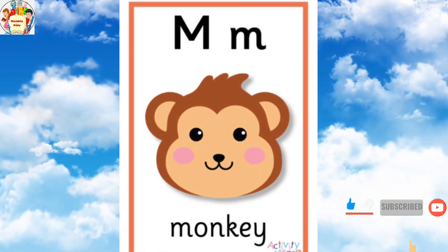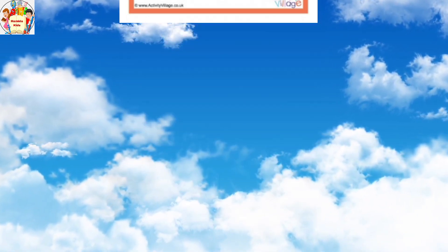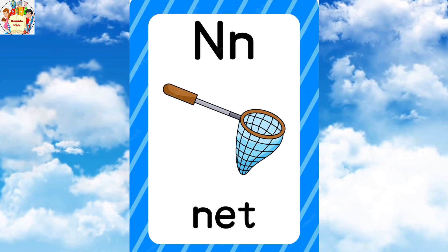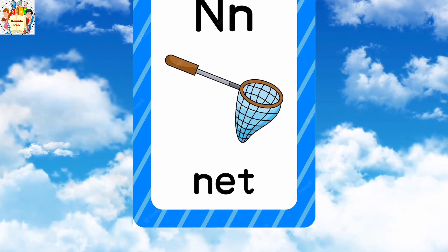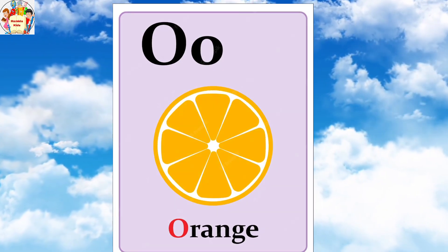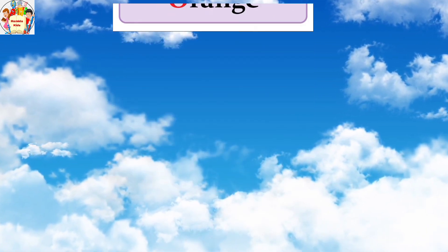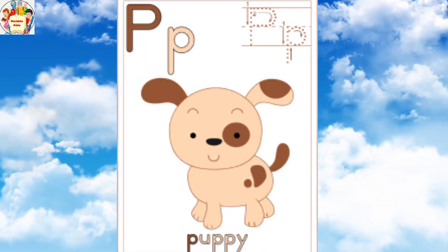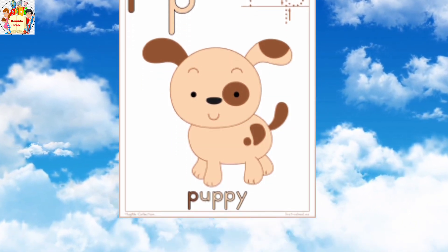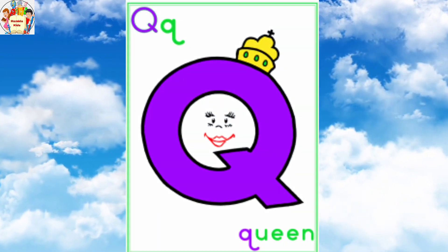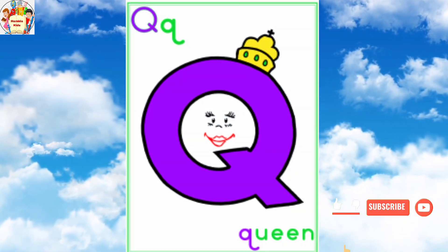M for monkey. N for nut. O for orange. P for puppy. Q for queen.